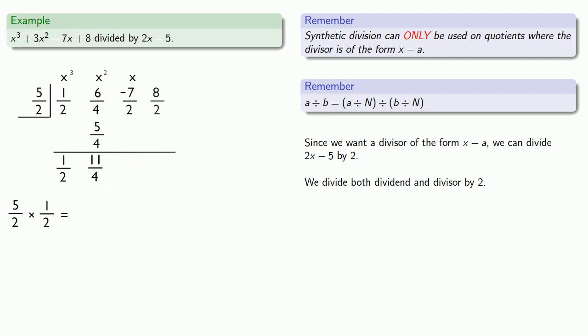Multiply by 5 halves. Add to the next column. Again, we need to find a common denominator to add. Multiply by 5 halves. Add to the next column.